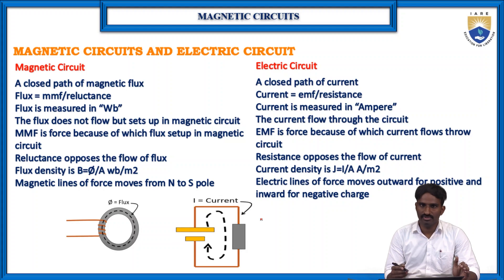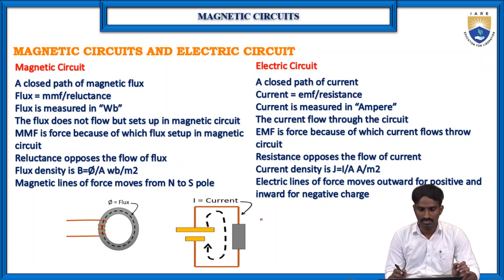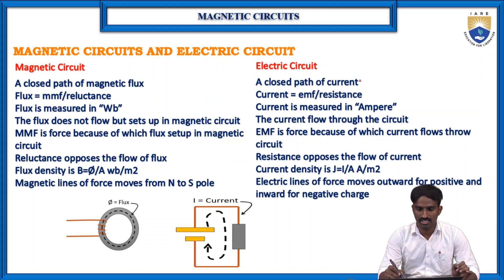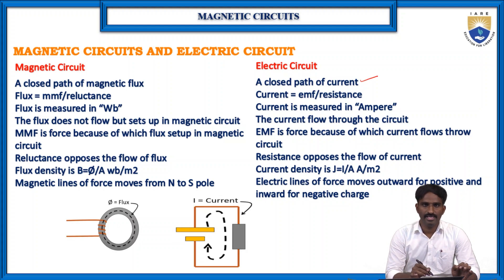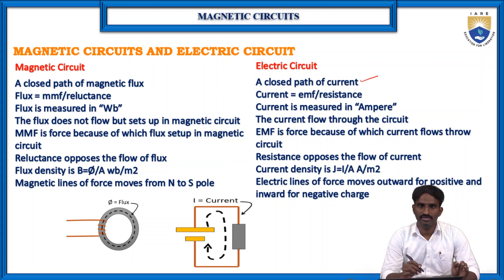Let me start with the electrical circuits, since we are well aware about them, and compare what are the similarities and differences in magnetic circuits over electrical circuits. In the first point: in electrical circuits, a closed path of current — current will flow only when there is a closed path. And similarly, in magnetic circuits, a closed path of magnetic flux — the flux will flow around a closed path of the magnetic circuit.